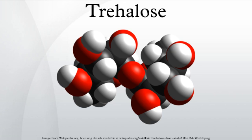In nature, trehalose can be found in animals, plants, and microorganisms. In animals, trehalose is prevalent in shrimp and also in insects, including grasshoppers, locusts, butterflies, and bees, in which blood sugar is trehalose. The trehalose is then broken down into glucose by the catabolic enzyme trehalase for use.